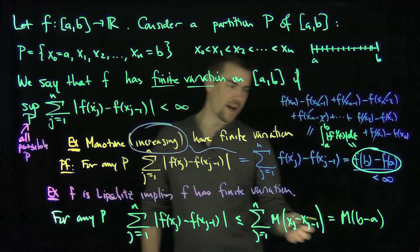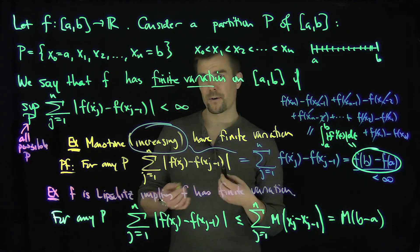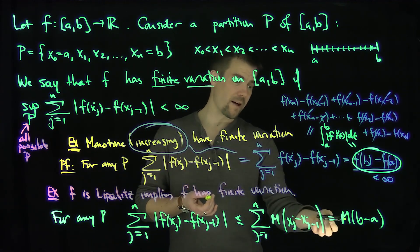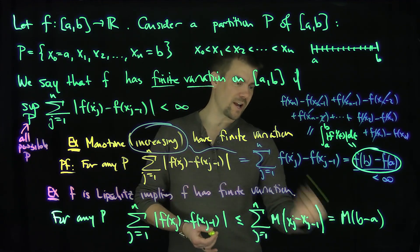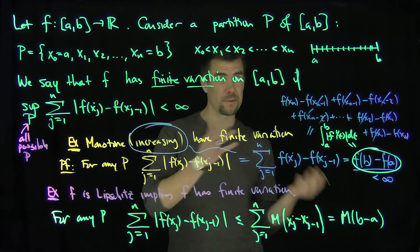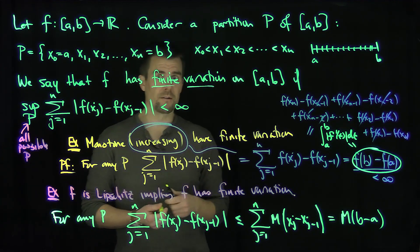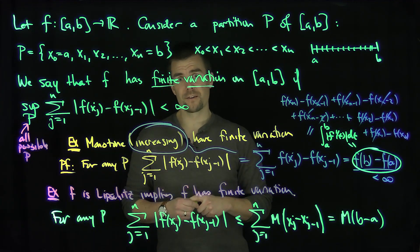This is M(b - a). Again, if this function f was differentiable and there was a uniform bound on the derivative, that bound would be M. So we're seeing that the variation is bounded by something involving the absolute value of the derivative. That's something to keep in mind as we begin our study of functions of finite variation. Thank you very much.